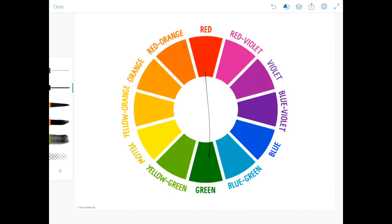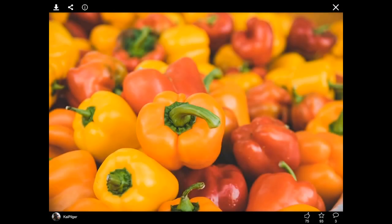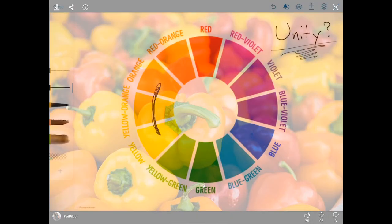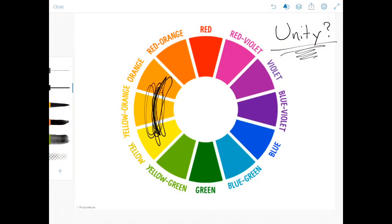So complementary colors are what you want to use for contrast. But what if you want unity? Unity means your colors belong together. What if I used these colors? This photograph and this photograph and this photograph look harmonious because all the colors are close together on the color wheel, which gives them unity.